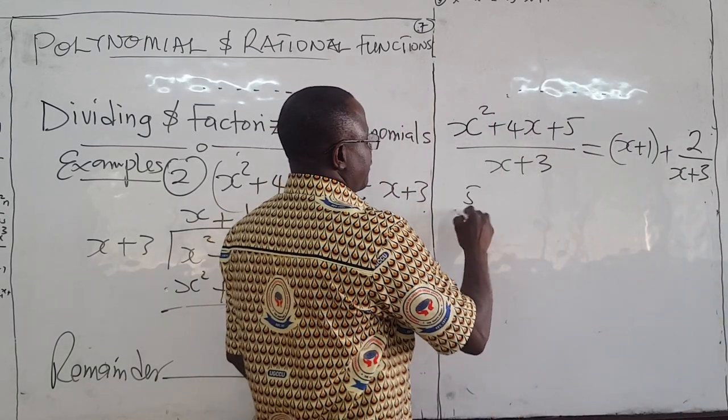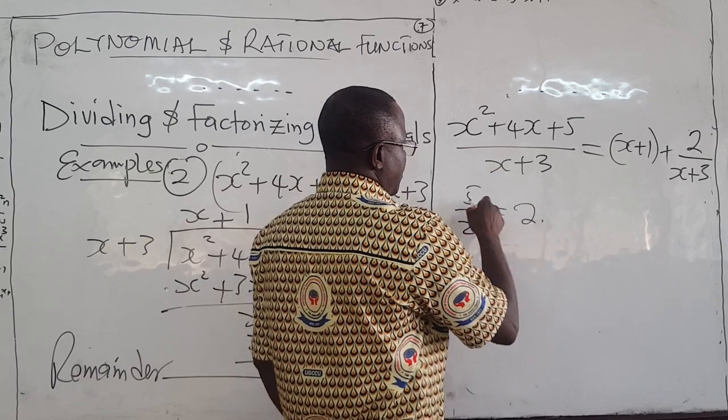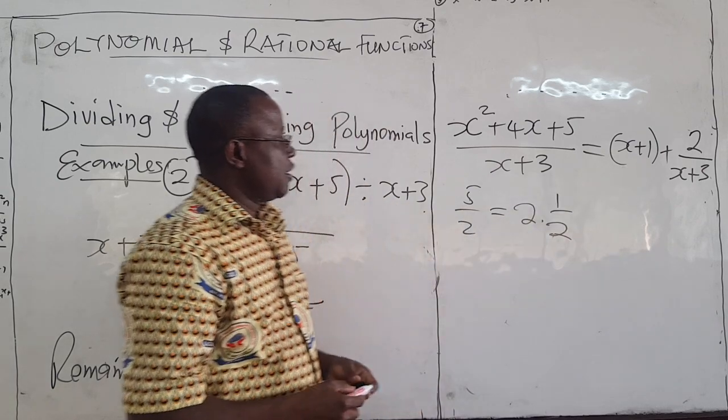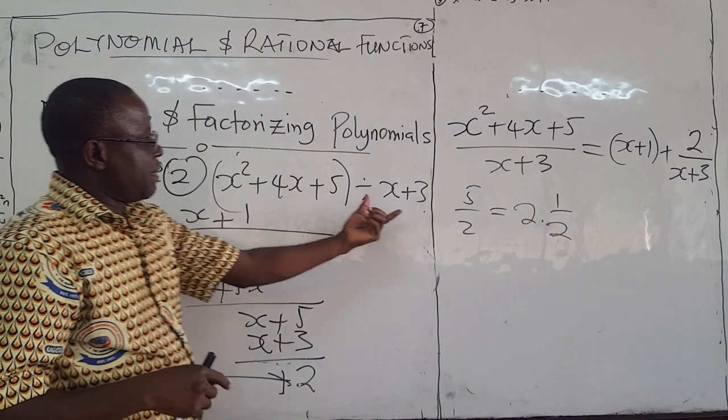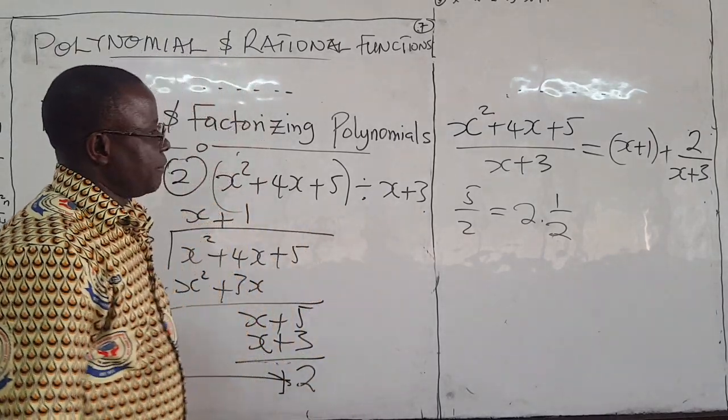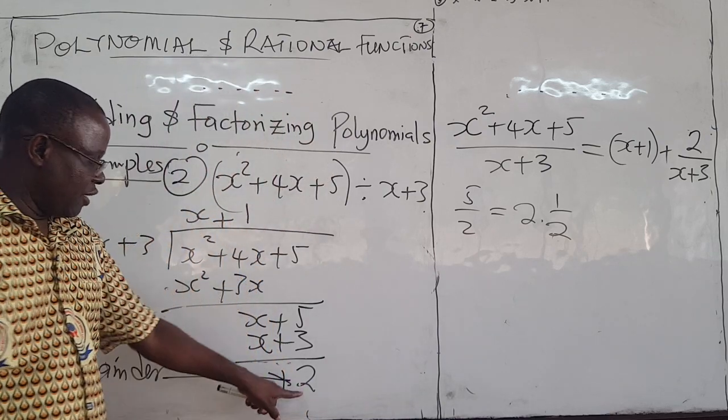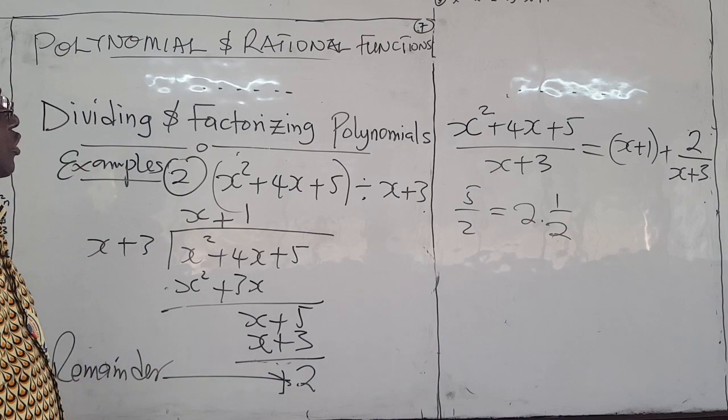See that? Like, when you divide 5 by 2, 2 goes into 5 two times, remainder 1 over 2. So, when you divide a quadratic by this linear equation, you don't always get a zero remainder. Sometimes, you have a non-zero remainder like that. That is the complete equation.